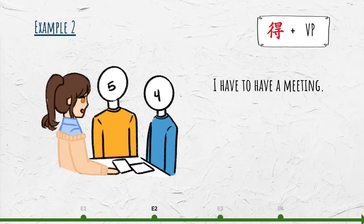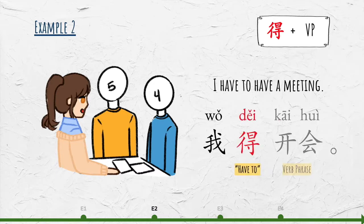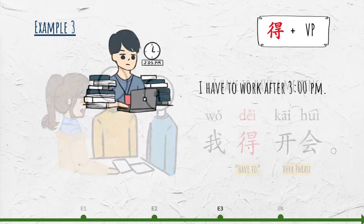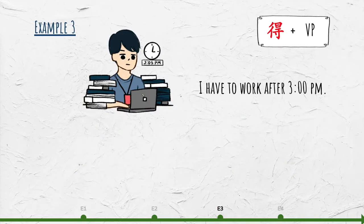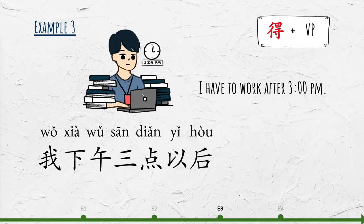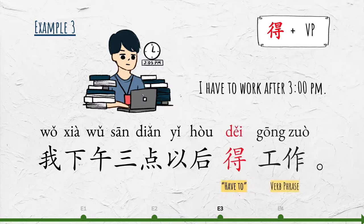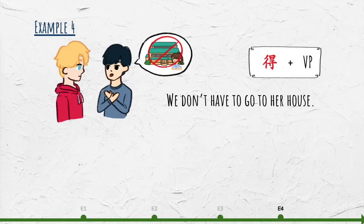Here are two more examples. I have to have a meeting: 我得开会. I have to work after 3 o'clock p.m.: 我下午三点以后得工作.